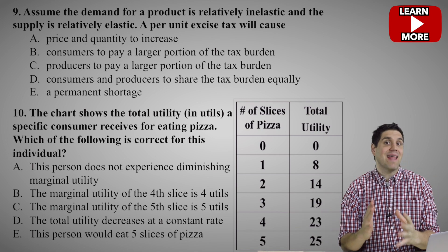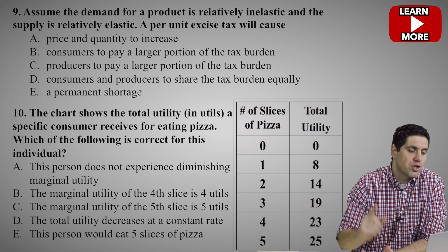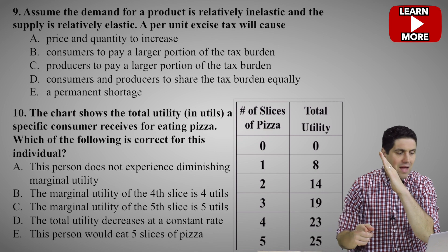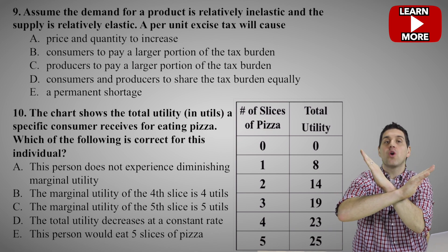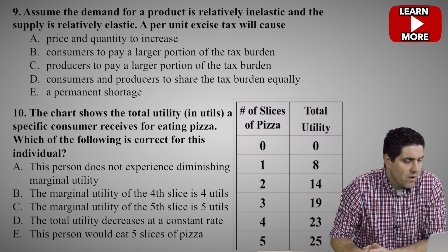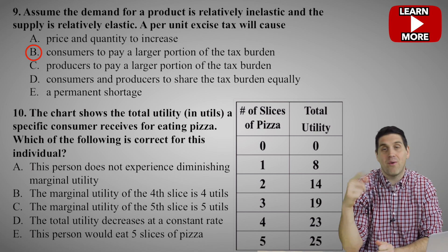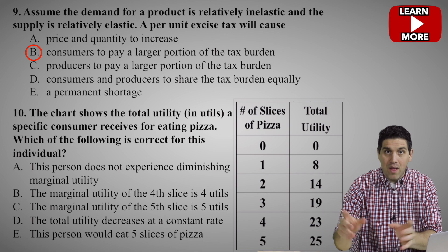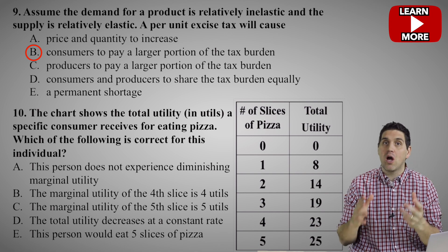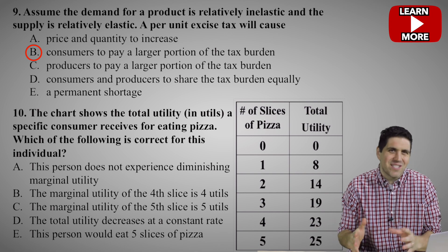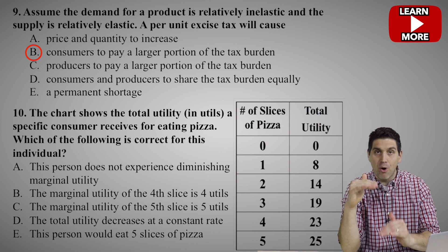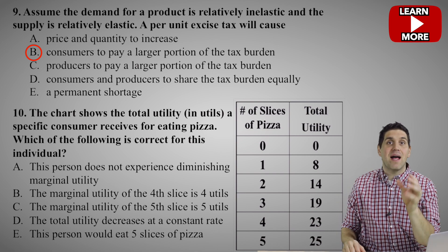We take this idea of taxes and combine it with elasticity. Assume the demand for a product is relatively inelastic — a very steep demand curve — and the supply is relatively elastic, so relatively flat. When there's a tax and the supply curve shifts to the left, the right answer is B: consumers will pay a larger portion of the tax burden. When demand is inelastic, consumers are willing to pay even if the price goes up. So when there's a tax, quantity falls just a little bit and consumers pay a larger portion of that tax burden.